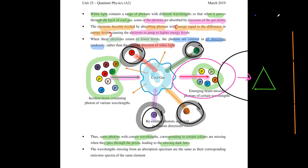One thing to note is that the wavelengths missing from your absorption spectrum are the same as the corresponding emission spectra of the same element. In other words, the colors that you see in your emission spectrum are the dark lines that you see in your absorption spectrum.